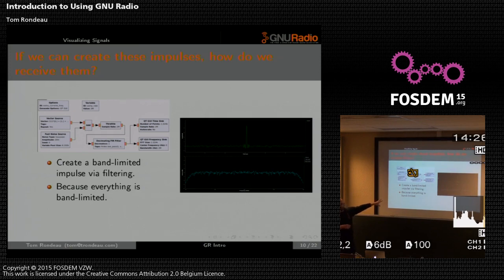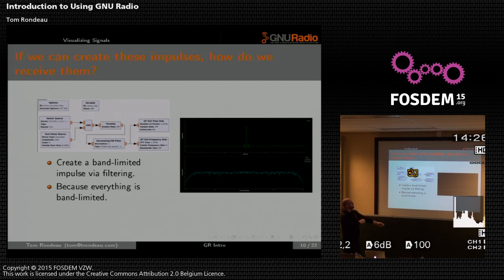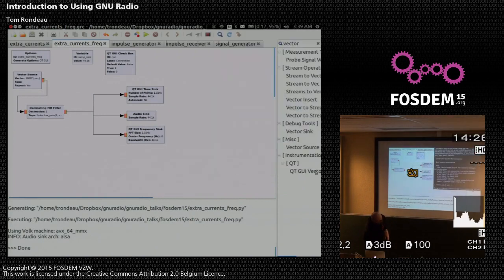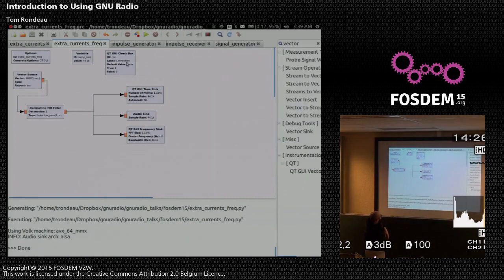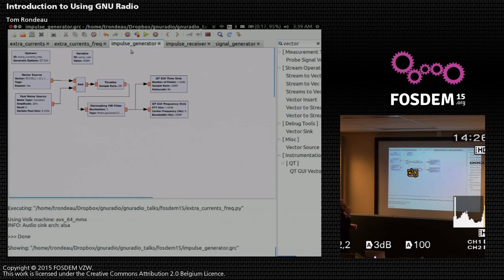Everything is band-limited; everything is a filter. This flow graph, called the impulse generator, is our attempt to take the Leiden jar experiment and simulate it. It's fairly easy to generate an impulse in simulation — it's just a series of zeros and then a one, repeated so we can see the phenomenon over and over again.